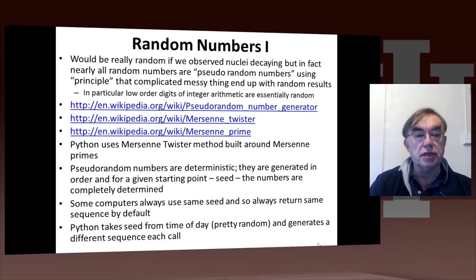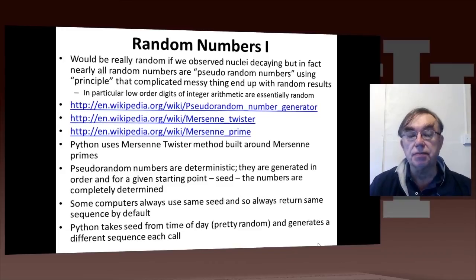The most interesting feature about random numbers that we used in that Python program when we called rand or randn was they aren't really random. Namely, we did not actually have little sensors looking at nuclei decaying and counting that decay times and generating a random number that way. Rather, what computers use are so-called pseudorandom numbers. And they use our basic principle that if you take something pretty complicated and messy, then you often get random results.